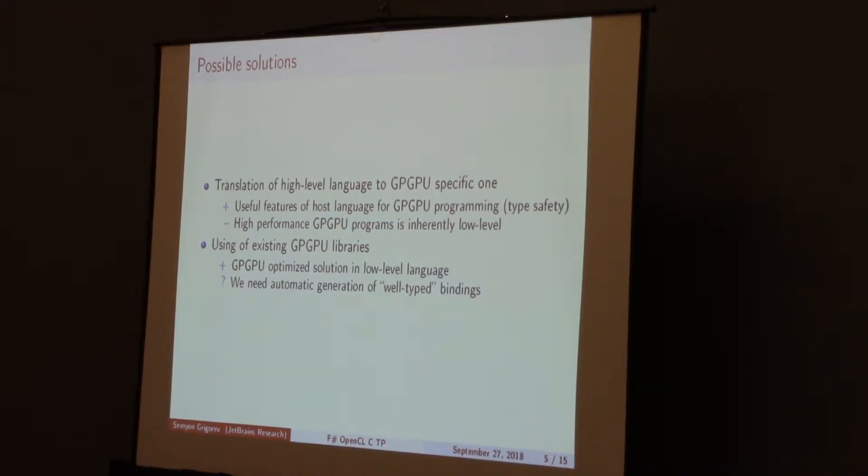How can we simplify the interaction between high-level programming languages and low-level languages? The first way is to provide a translator from high-level language to low-level language. It's a good idea because it provides the ability to use the power of high-level languages for GPU development. But if we want to create really high-performance GPU solutions, we should use low-level languages with some architecture-dependent features.